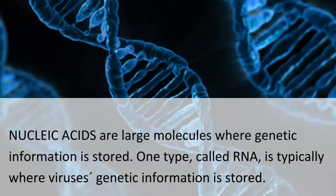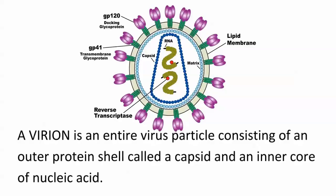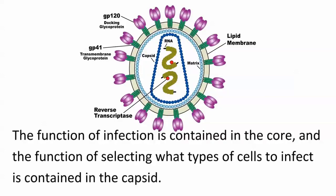Nucleic acids are large molecules where genetic information is stored. One type, called RNA, is typically where viruses' genetic information is stored. A virion is an entire virus particle consisting of an outer protein shell called a capsid and an inner core of nucleic acid. The function of infection is contained in the core, and the function of selecting what types of cells to infect is contained in the capsid.